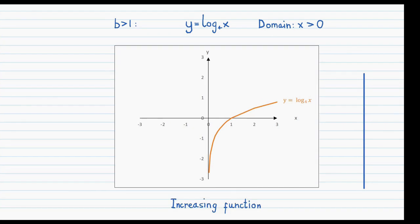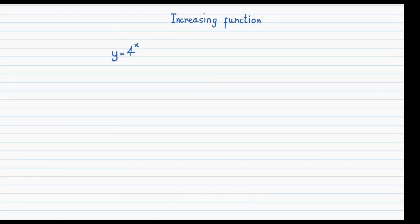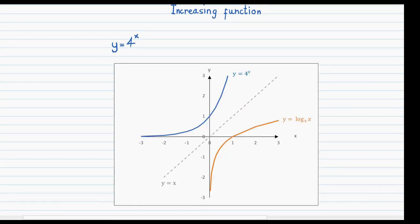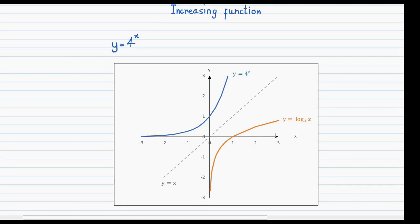The vertical line never cuts the graph at more than one place, so it qualifies as a function. Since increasing x causes y to increase, it's an increasing function. We came across logarithms because we're trying to find the inverse of an exponential function — the exponential function that gives rise to an inverse of log x base 4 would be 4 to the power of x. Pairing these together gives two graphs that form a valid pair of function and inverse, earning function notation.